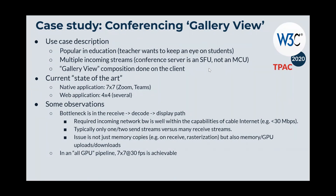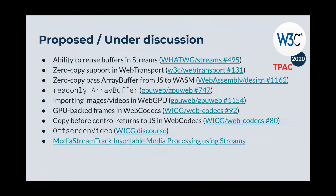That illustrates a practical need and practical impact of memory copies — and again, this is not a machine learning issue, it's broader than that. Looking around, there are various proposals under discussion in different groups that are directly or indirectly related to reducing memory copies. The ones that crossed my radar touch on streams, WebTransport, WebAssembly, WebGPU, WebCodecs, media in general, and WebRTC.